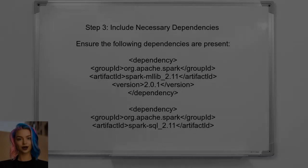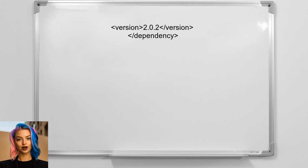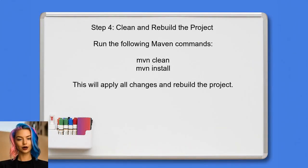Also ensure that all necessary dependencies are included in the pom.xml, including Spark dependencies and any other libraries required for the project. Finally, clean and rebuild the project to ensure that all changes are applied — this can be done using Maven commands in the terminal.